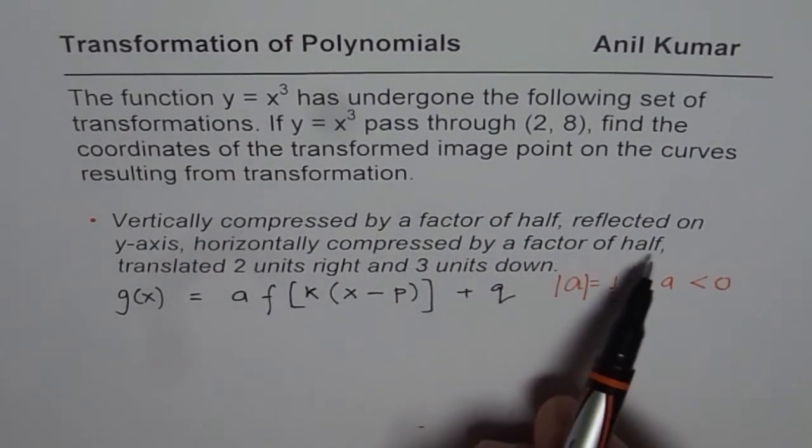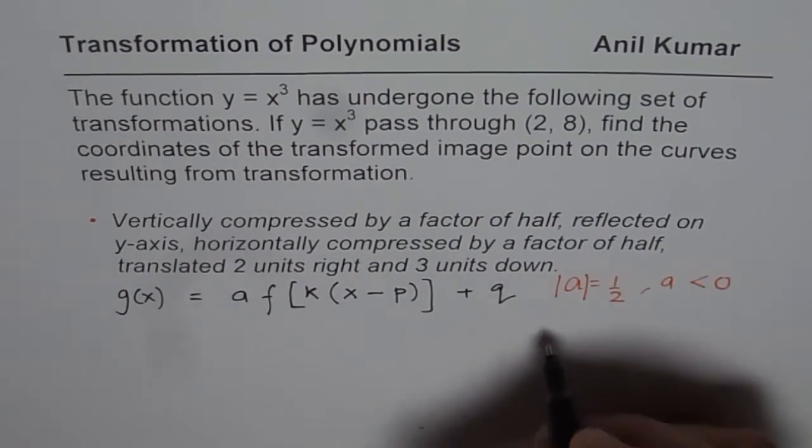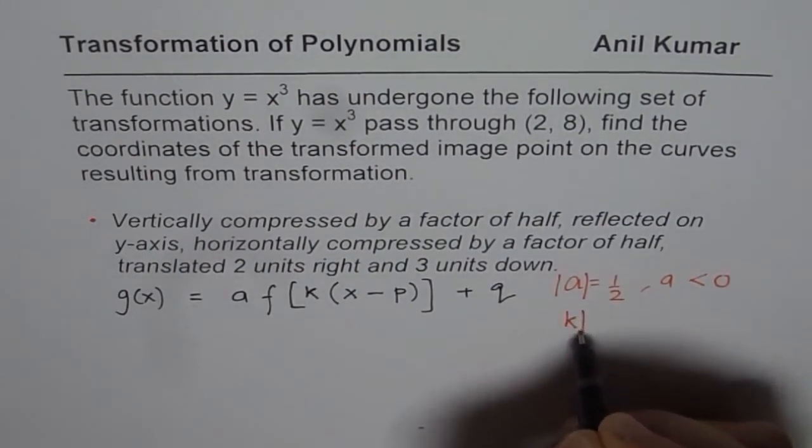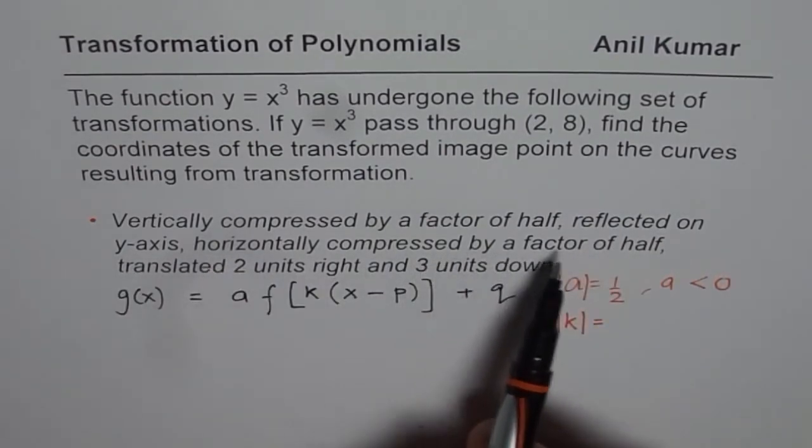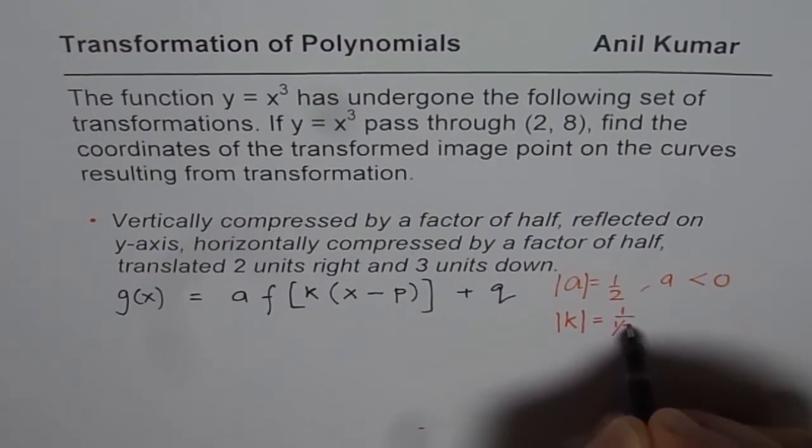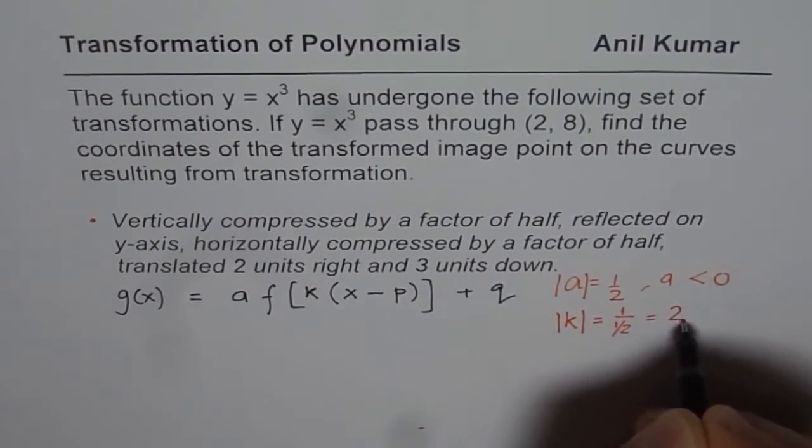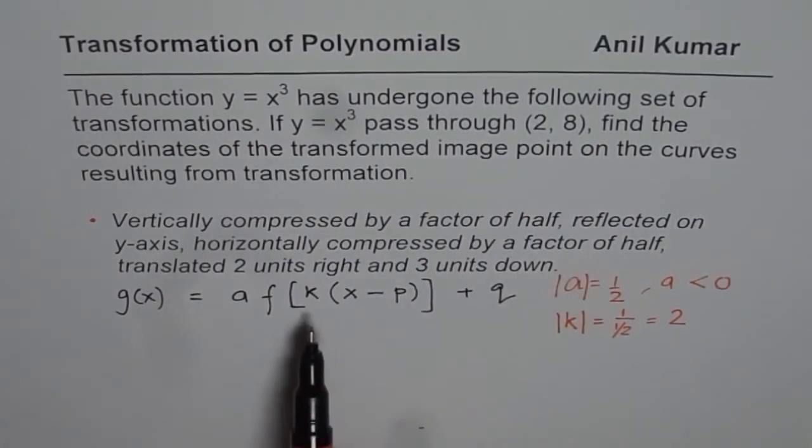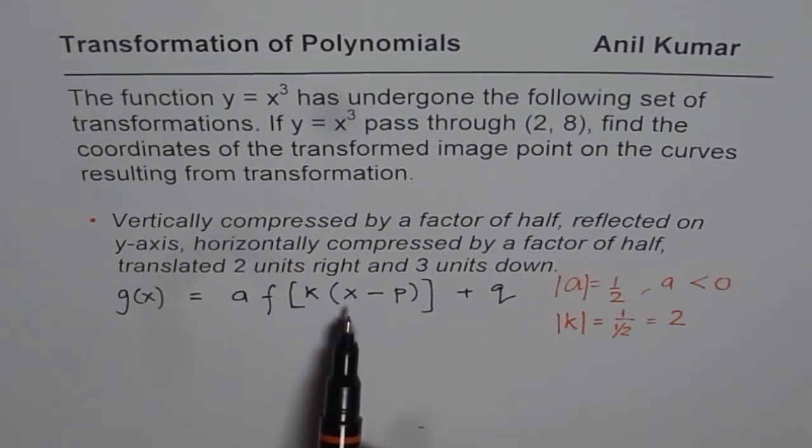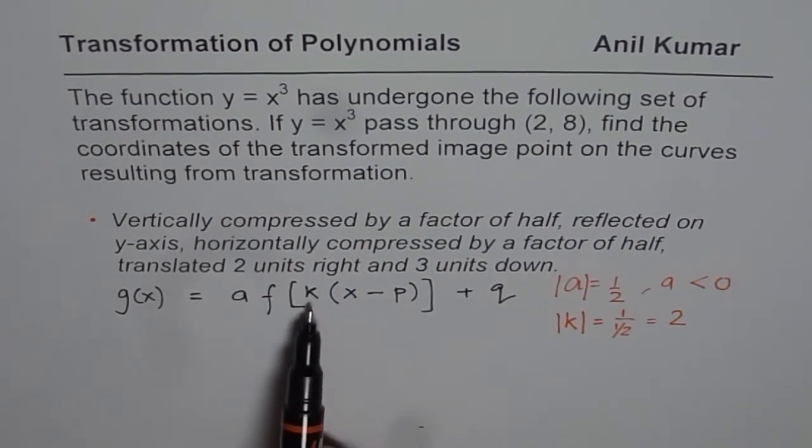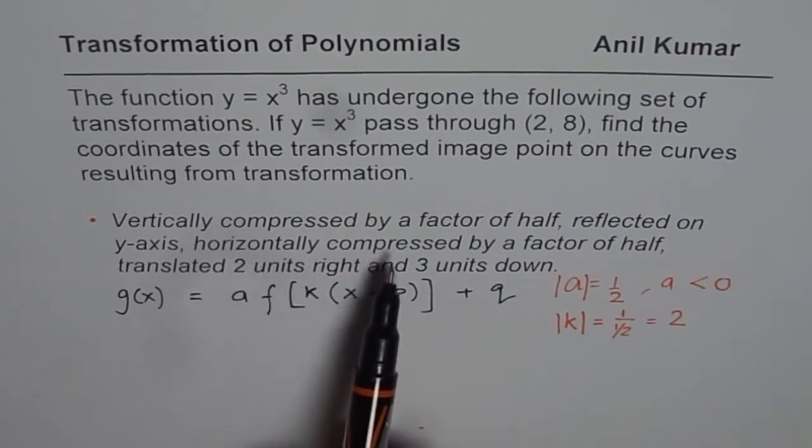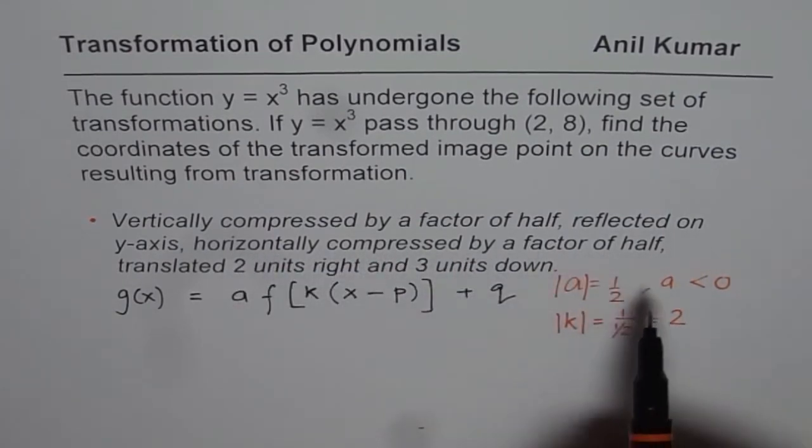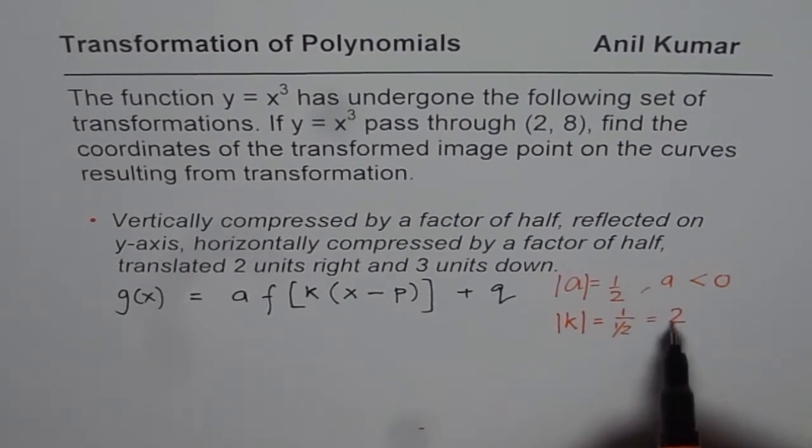Horizontally compressed by a factor of half — that means k, let me write absolute value of k — is horizontally compressed by a factor of 1 over half, which means 2. So whenever we are inside, we are doing kind of reverse. So you're getting to multiply by 1 over half or by 2. So k value is 2.